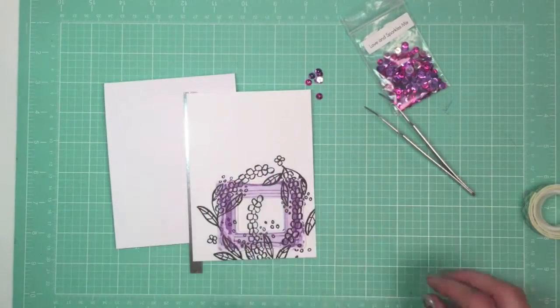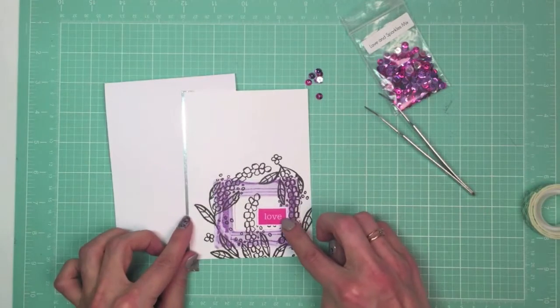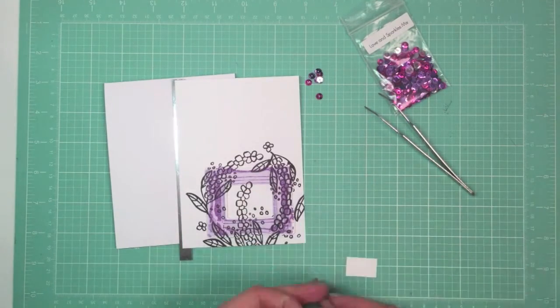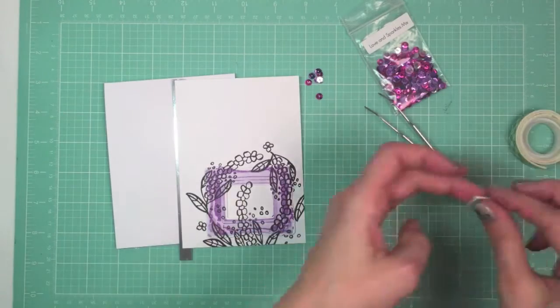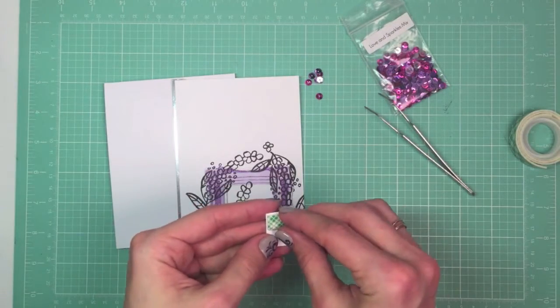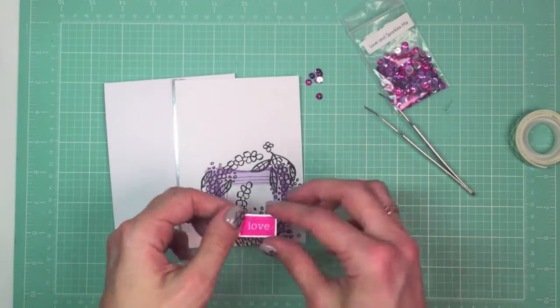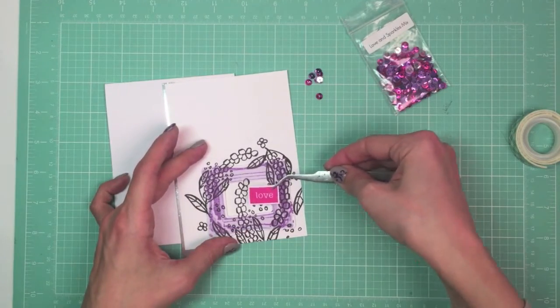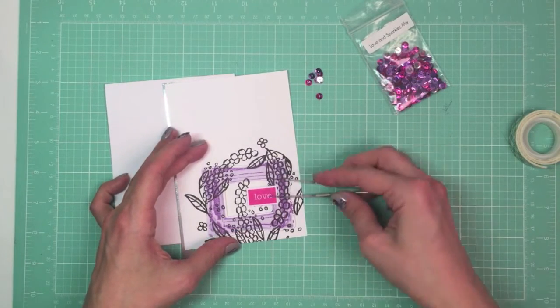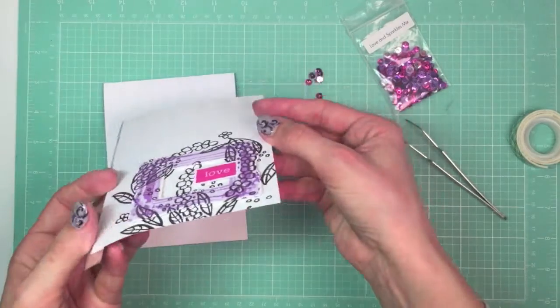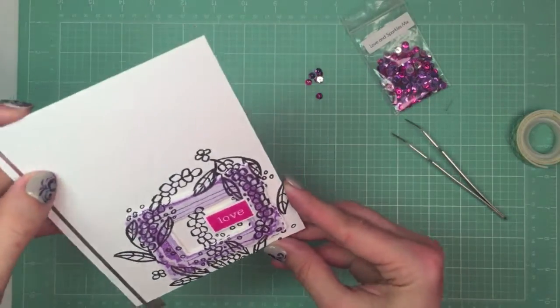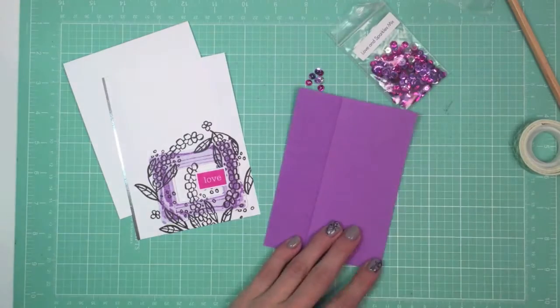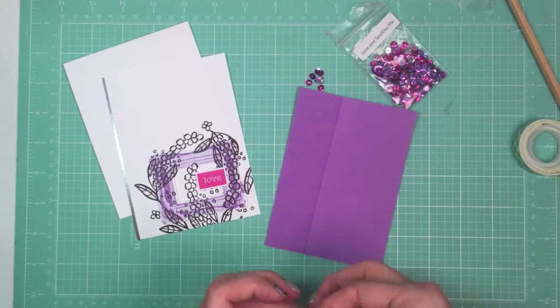I hope you do too. Thank you so much for watching, and don't forget to check out the Neat and Tangled blog for your chance to win a MISTI tool. Stop by the My Sweet Petunia blog to win a $100 certificate to the Neat and Tangled store. All week long, our designers are going to showcase more ideas and more projects using both of these products.